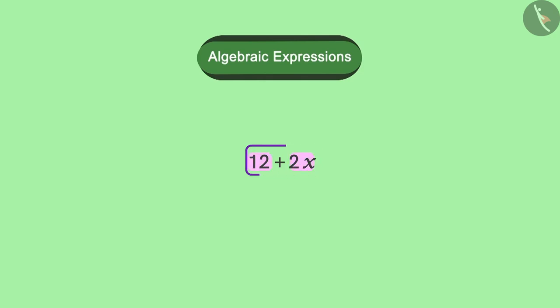Take a look at the given expression. We can see here that the expression has two parts. Here, 2x is the product of 2 and x, and then 12 is added to it. We saw in our last video that an expression has various parts which are formed separately at first and then they are added to one another. These parts are called terms.